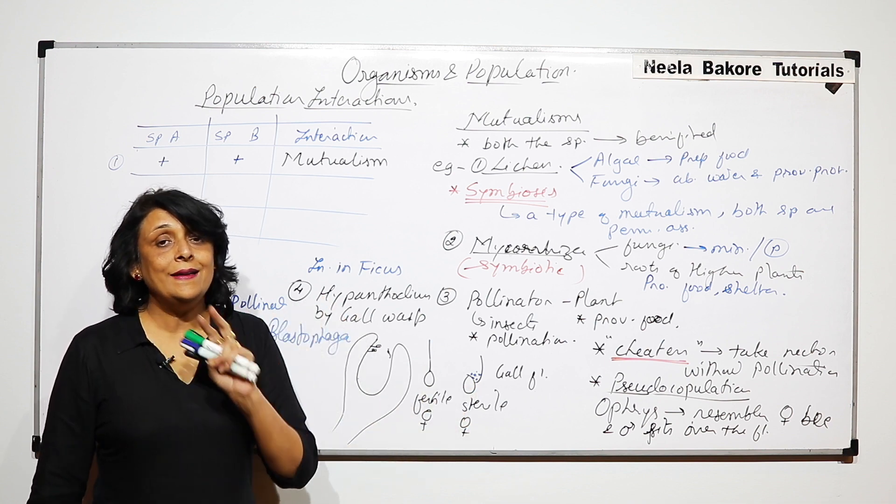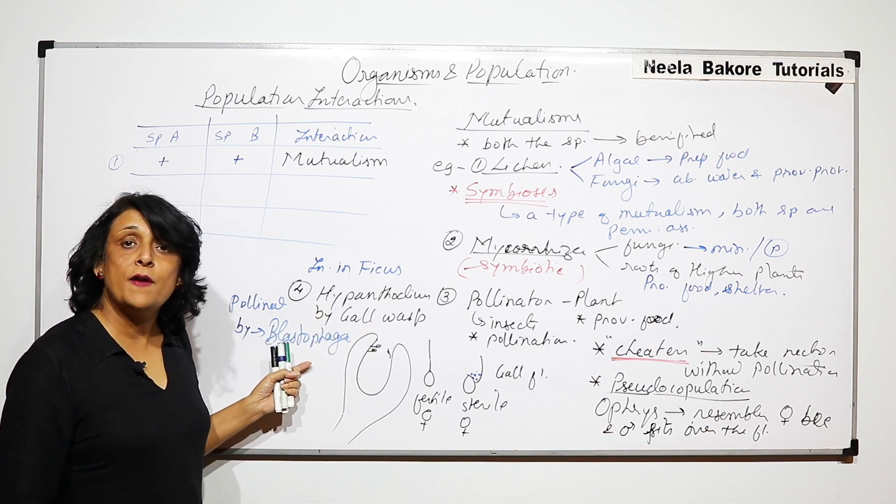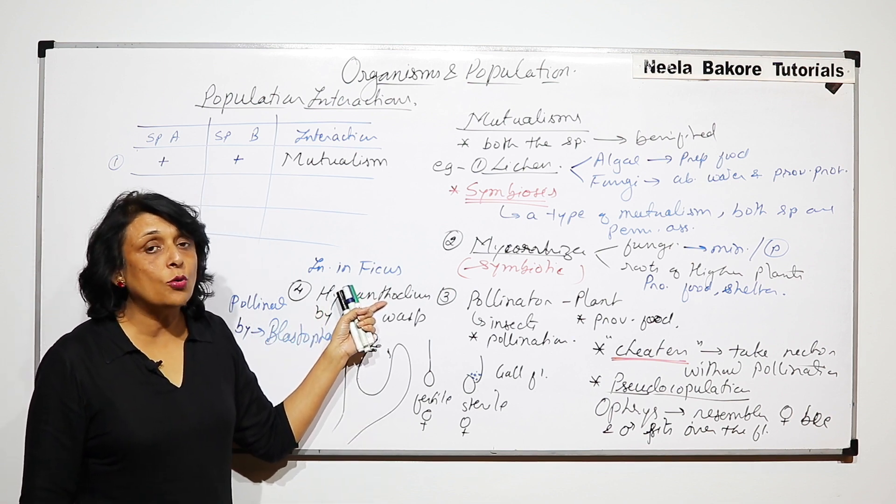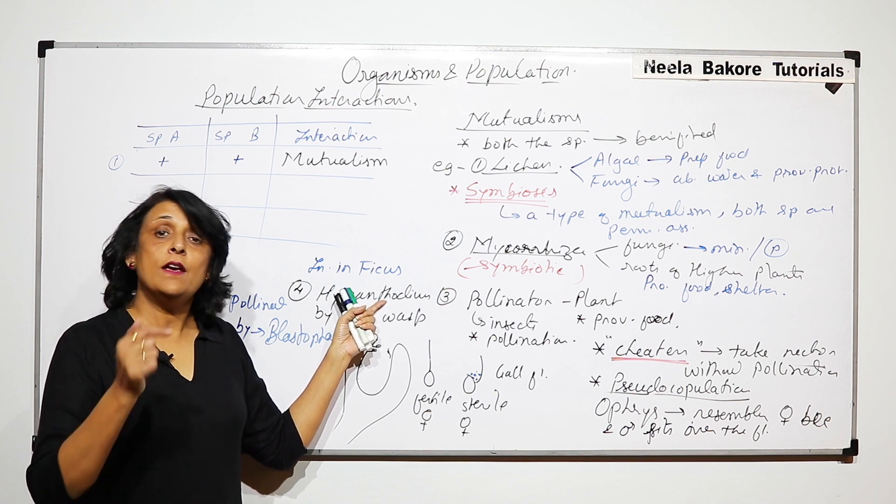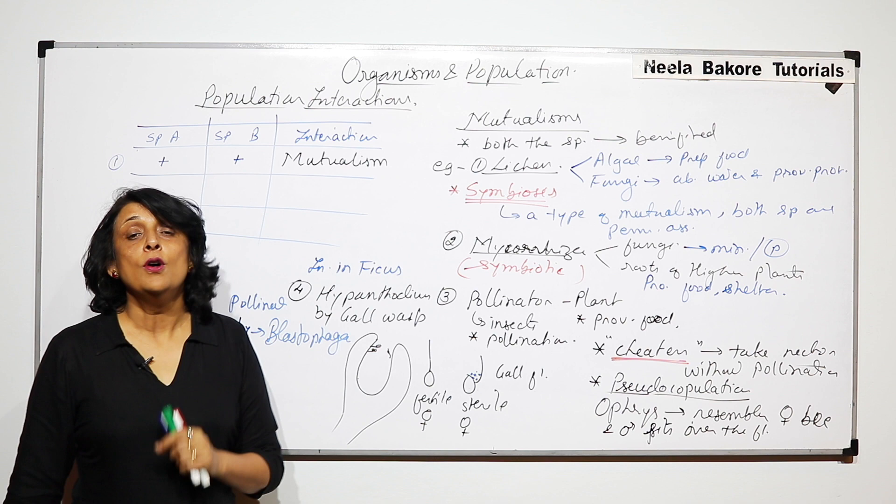The mutual interaction is so much that if blastophaga is not there, pollination in case of Hypanthodium would not take place. And if Hypanthodium is not there, blastophaga will not be able to reproduce.